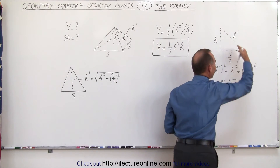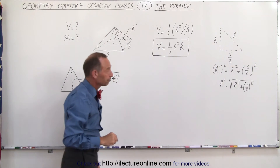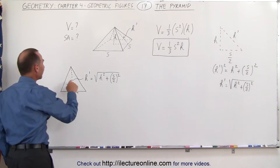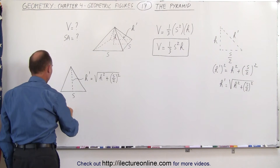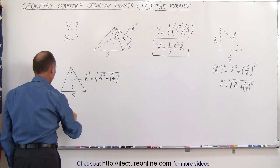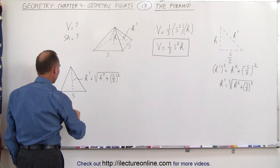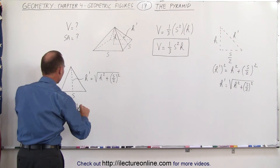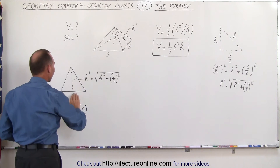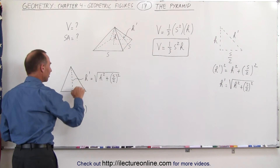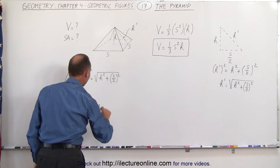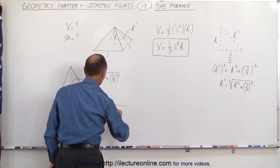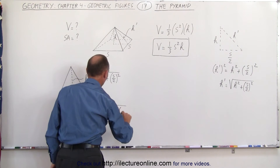That's how we find the slanted height of the pyramid. Then to find the area of a single triangular face, the area of the triangle equals one-half the base s times the slanted height h prime, or one-half s times the square root of h squared plus (s/2) squared.